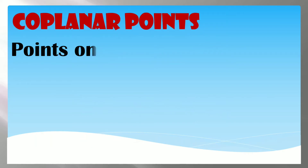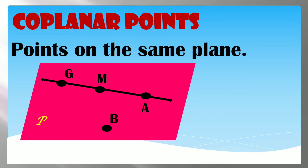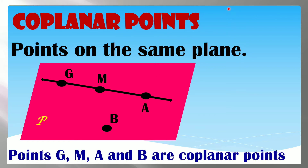Coplanar Points are points on the same plane. Points G, M, B, and A are coplanar points. If points are on a line, they are collinear points. If they are on a plane, we call them coplanar points.